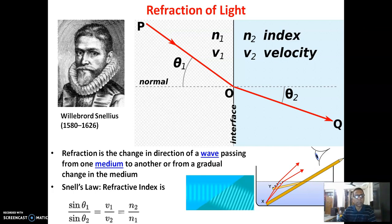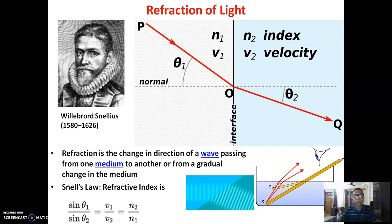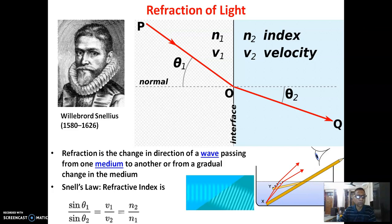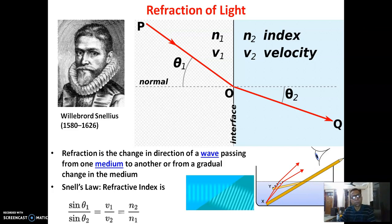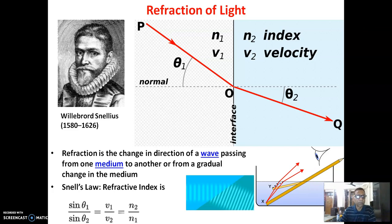As per Snell's law, sin θ₁ / sin θ₂ gives the ratio of V₁ to V₂, and the light velocity decreases to V₂ in the denser medium. This equals the ratio of N₂ to N₁.